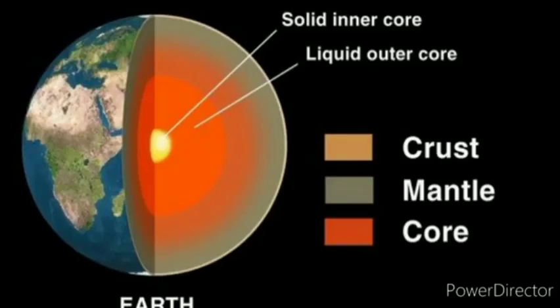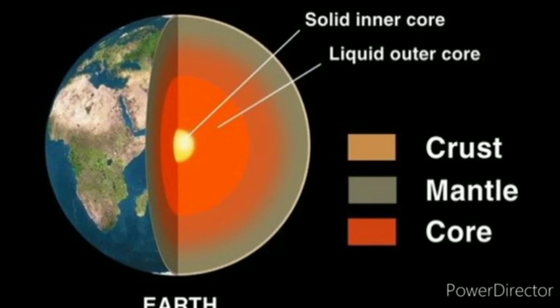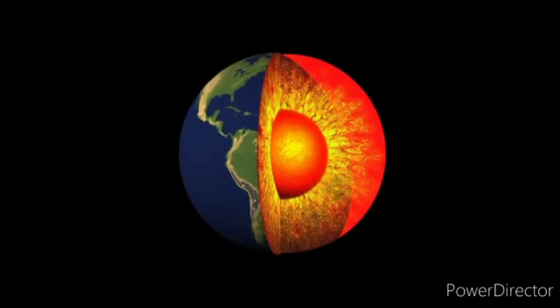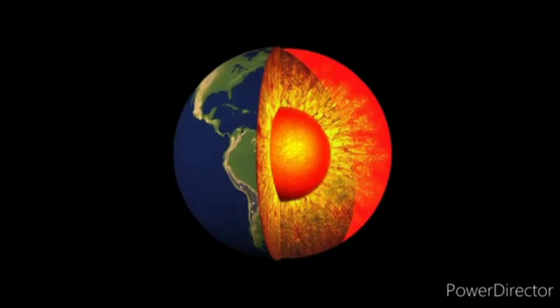Three major concentric zones. Number 1: Core. The core is the innermost zone. It is extremely hot and has a solid inner part, surrounded by a thick layer of molten rock and semi-solid material.